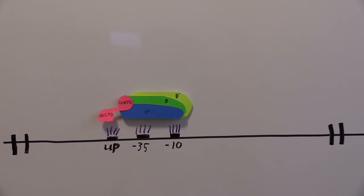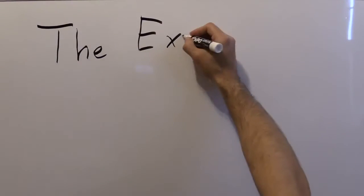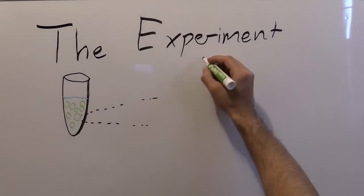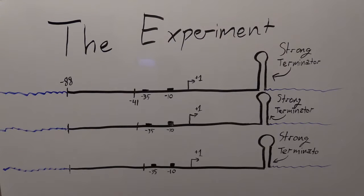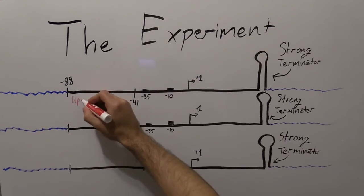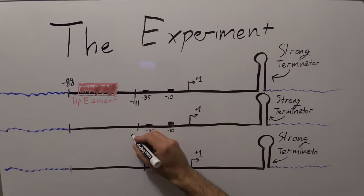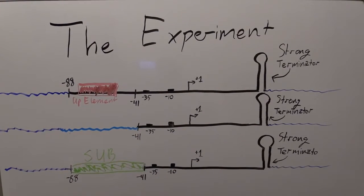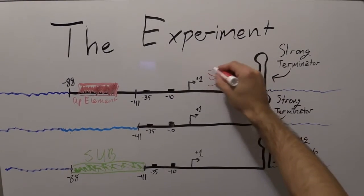Now let's talk about the experiment for how they discovered this information. It's an in vitro assay. They had a vector and would insert a promoter with or without an UP element to see how transcription varied. There are three conditions being tested, and they all have a hairpin loop structure at the end to ensure all transcription ends at the same point. The top condition marked 88 has the promoter and the UP element. The second removed DNA from the negative 40 to negative 88 site, removing the UP element. The third removed that same region but substituted in random bases.